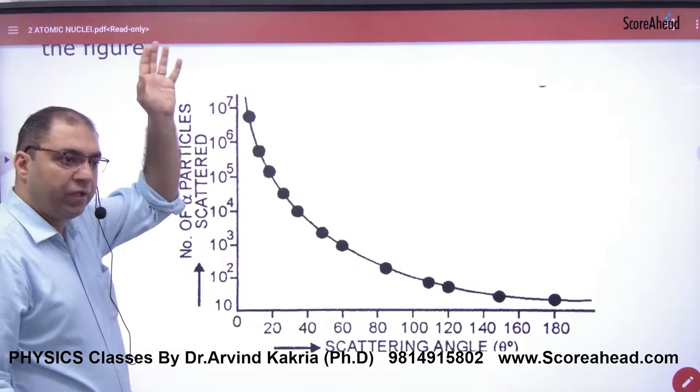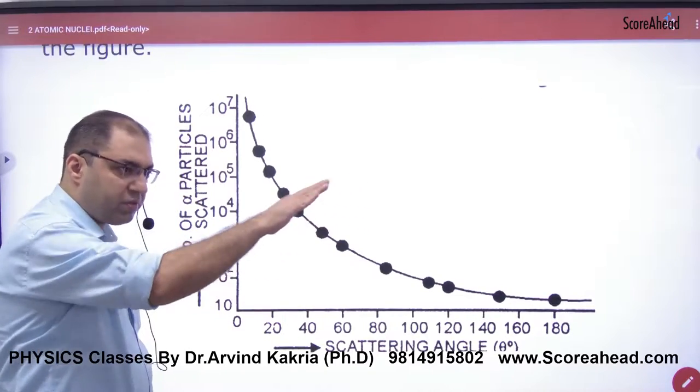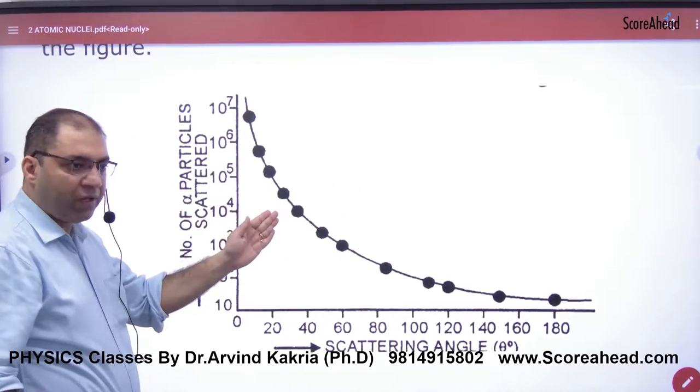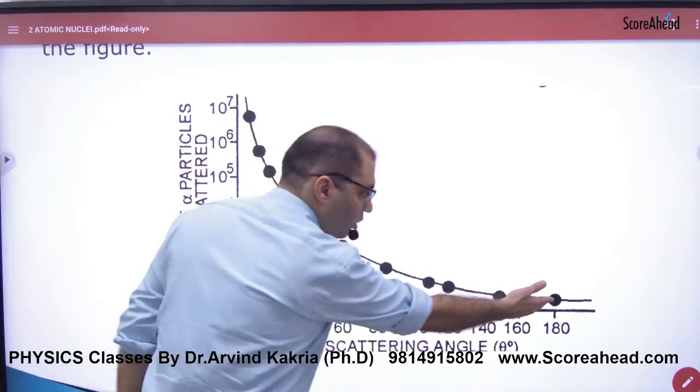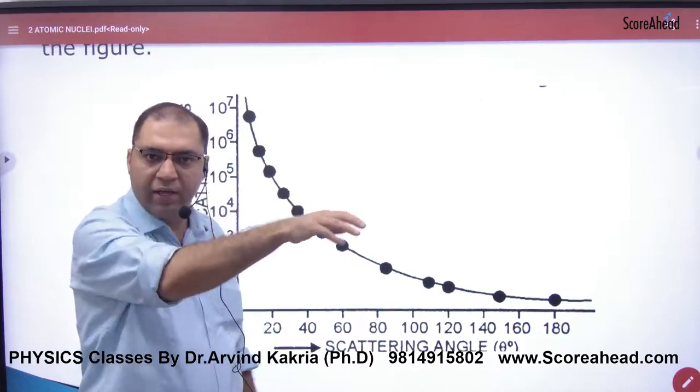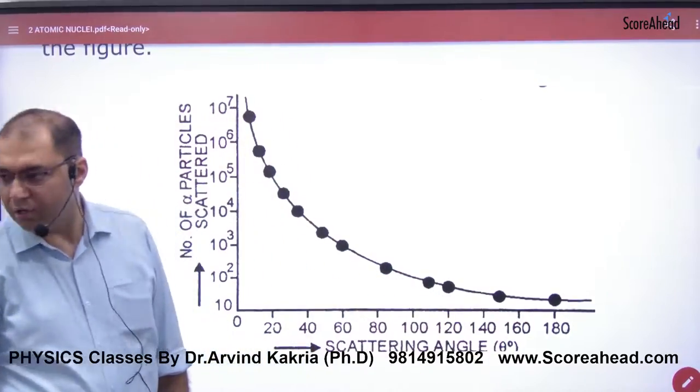Ten to power seven particles. And if the angle is less than 60, 45 and 90 is greater than, and 180 is less than, so in the graph number of particles will be less. What will be scattering angle? 180.